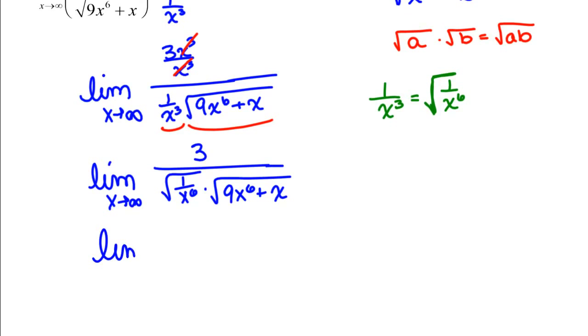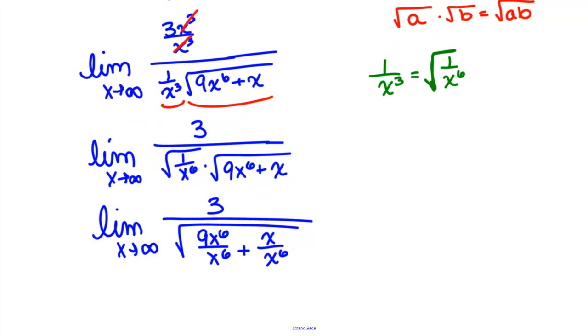So we have limit as X goes to infinity of 3 divided by the square root of 9X to the 6th over X to the 6th plus X over X to the 6th. Dividing through by X to the 6th. Simplifying that algebraically.